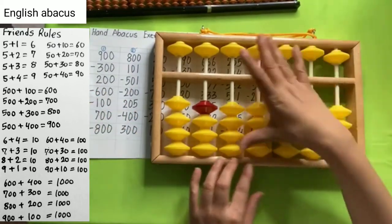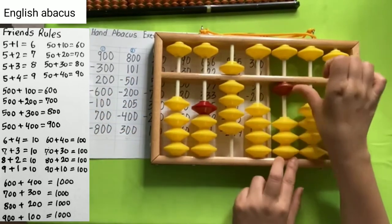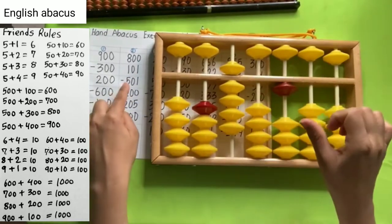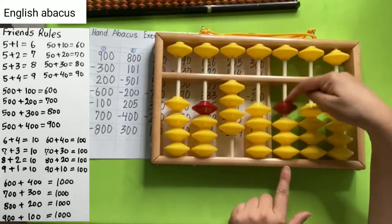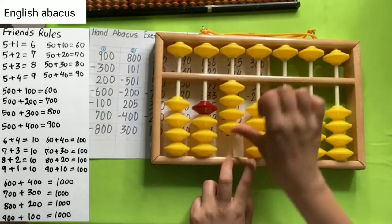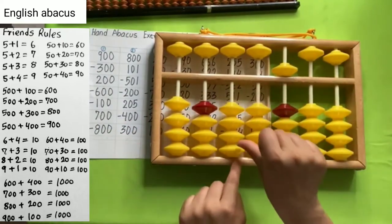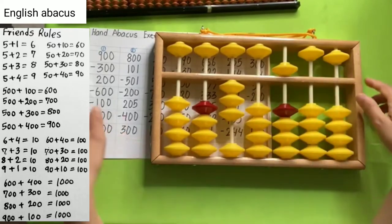Number 2. 800. 100 and 100. 101. Reduce 501. This one. Reduce 200. Add 205. This one. Reduce 400. Add 300. And your answer is 305.